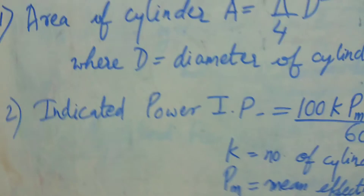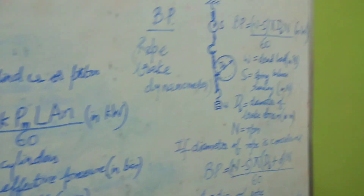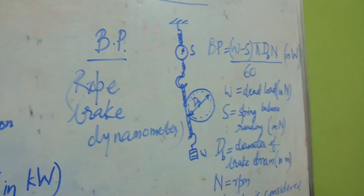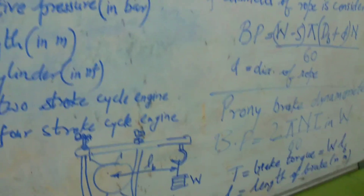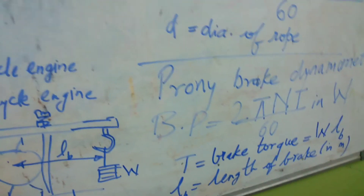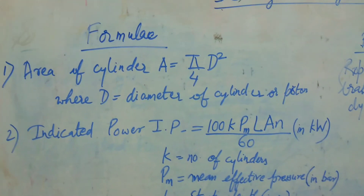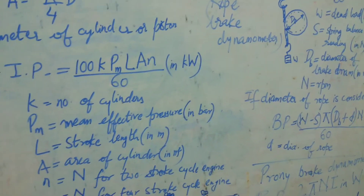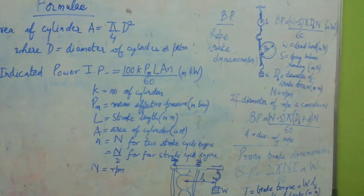To summarize: area of cylinder formula, indicated power IP = 100 × k × pm × L × A × n / 60, rope brake dynamometer BP = (W − S) × π × DB × N / 60, and prony brake dynamometer BP = 2π × N × T / 60, where T = W × LB. In the next video we will solve a problem using these formulae. Hope you liked the video, goodbye.